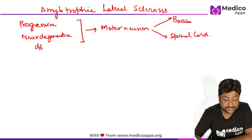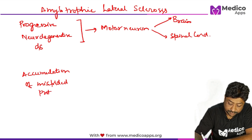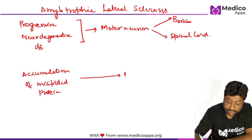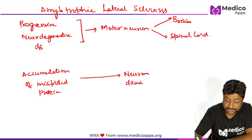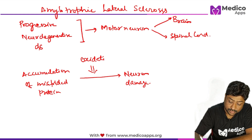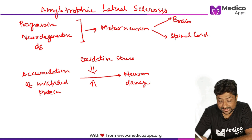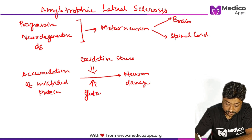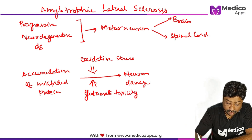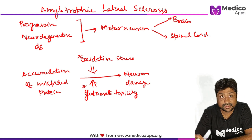Let's look in detail about the pathogenesis or pathophysiology. There will be accumulation of misfolded protein, and this misfolded protein will predispose the neurons to damage. There are two mechanisms by which neuronal damage will happen: number one being oxidative stress, and the second is glutamate toxicity. When we learn about the treatment, we will see the drugs which act on these specific mechanisms.